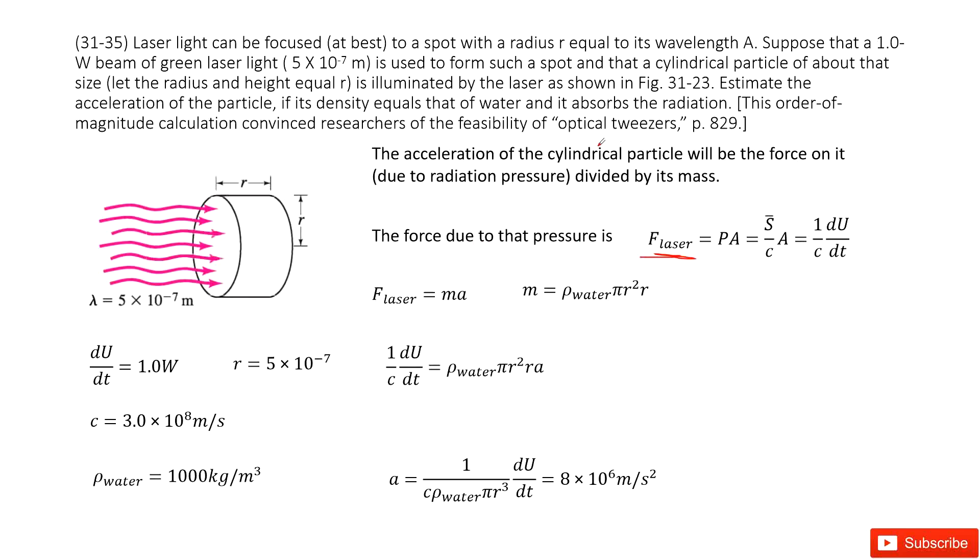As we talked about, this force will bring acceleration to the cylindrical particle. This force from the laser is F_laser = ma, where a is acceleration. This is what we're interested in. Now, how can we determine the mass of this particle? We can consider it as the density times the volume.